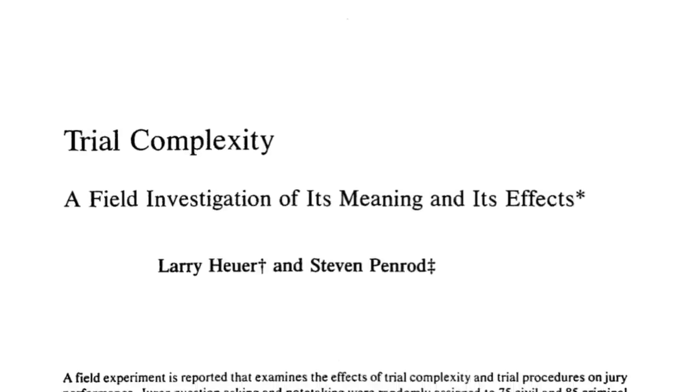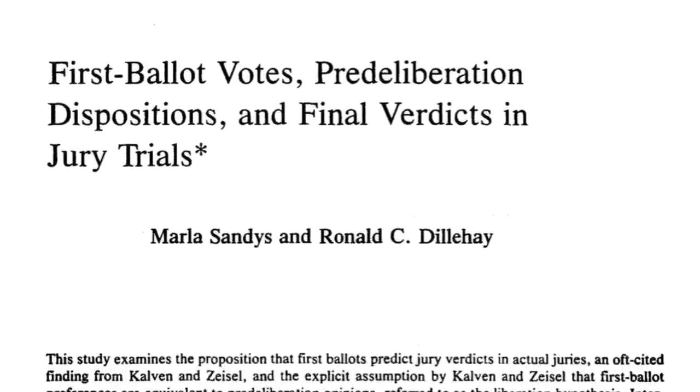Jurors themselves have some insight into the problems with the evidence and instructions. Hugh and Penrod found in 1995 that as case complexity increased, jurors felt less sure that their verdict reflected a proper understanding of the instructions. Hugh and Penrod in 1994 also surveyed 81% of jurors in 160 trials and found that as the amount of information increased, jurors admitted it was harder to decide the case. Difficulties in remembering trial details and the legal instructions make it difficult for jurors to do their job. There's additional evidence from Sandy's 1995 study that jurors fail to separate judgments of guilt and punishment in capital cases in the United States.